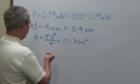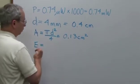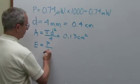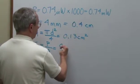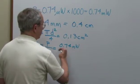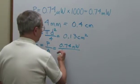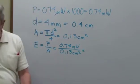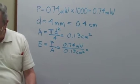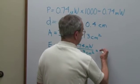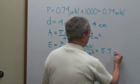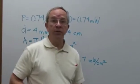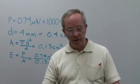And our irradiance then will be equal to the ratio of the power divided by the area. So we'll take our power of 0.74 milliwatts divided by our area, 0.13 centimeters squared. Put those numbers into our calculator. And we get 5.7 milliwatts per centimeter squared. So we've calculated now the irradiance of our laser beam coming out here.